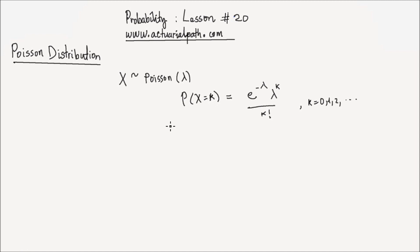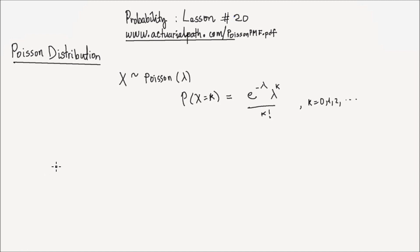This lesson is not about deriving the PMF of the Poisson distribution. If you're interested in the derivation, I have uploaded a file at www.actuarialpath.com/pPoissonPMF.pdf, where you would find a file describing the derivation of the Poisson PMF. In this lesson, we're going to derive the expectation, the variance, and the moment generating function of the Poisson random variable.